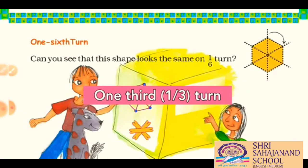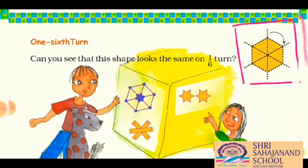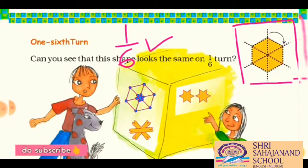Now let's come to the first topic, which is one-sixth turn. To understand this term, we have to look at a picture. On the screen you can see a hexagon, and it is divided using some symmetry lines. It is very important to understand what is one-sixth turn. To understand this, we have to find its symmetry lines — minimum three symmetry lines. You can see the first, second, and third symmetry lines dividing it.